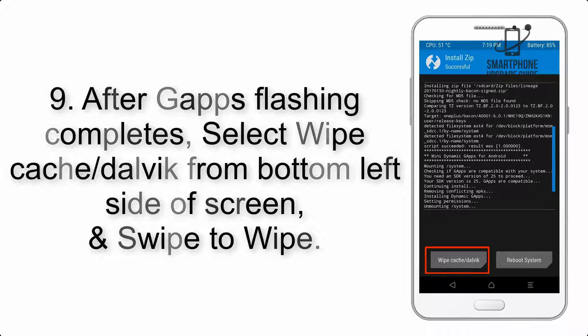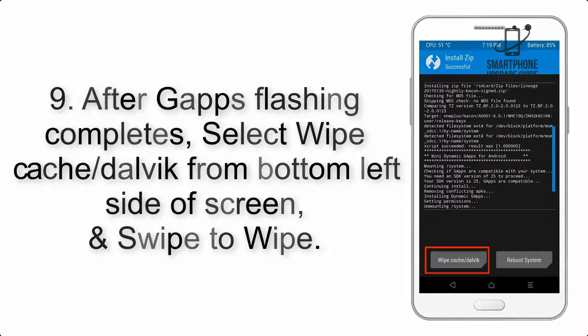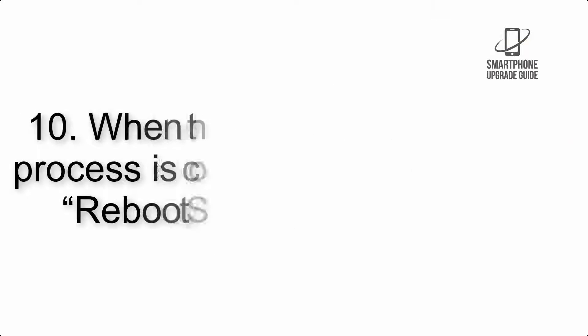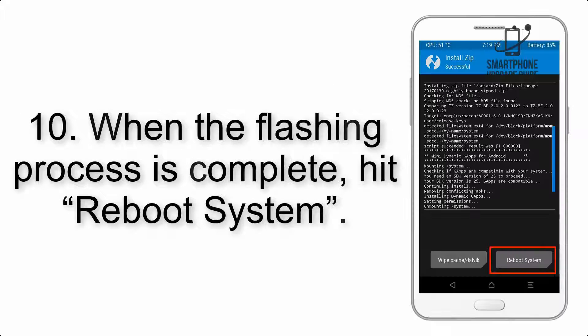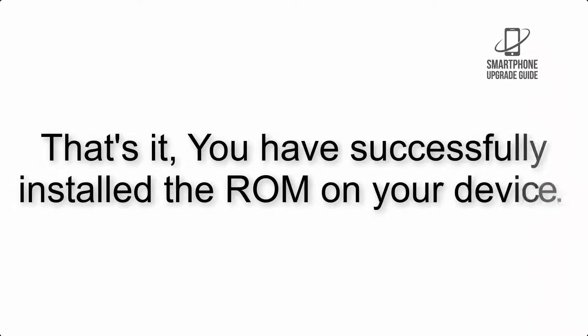Step 9: After G apps flashing completes, select Wipe Cache and Dalvik from the bottom left side of the screen and swipe to wipe. Step 10: When the flashing process is complete, hit Reboot System. That's it — you have successfully installed the ROM on your device.